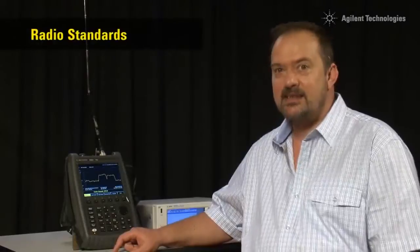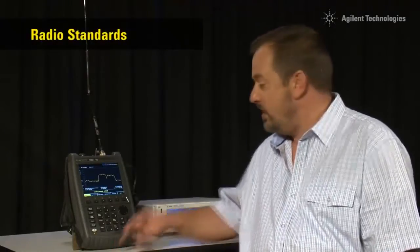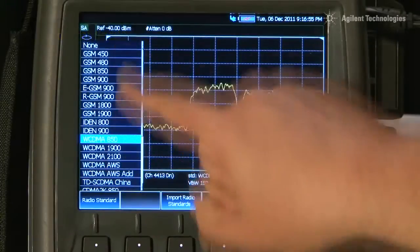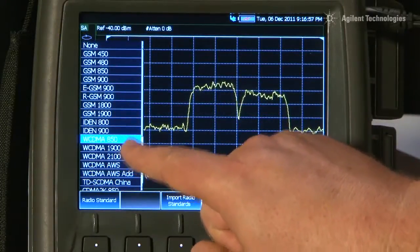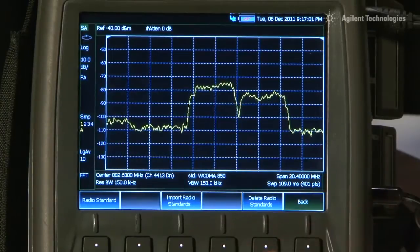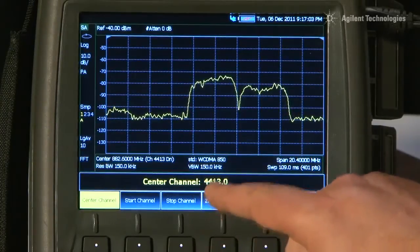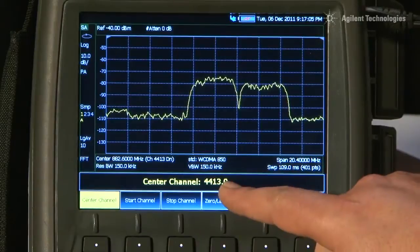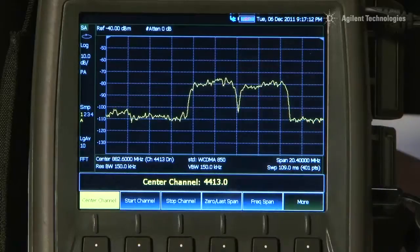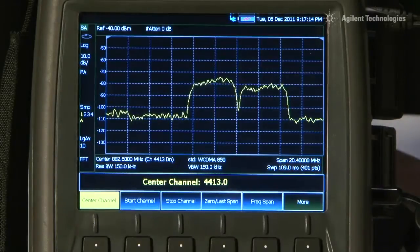If you are using a radio standard such as CDMA or GSM or WiMAX, we can select the radio standard from the built-in list here. Here I have selected WCDMA850 and you can see on the screen that the frequency is now measured in channel number rather than megahertz. This makes it very simple to change channel quickly in the radio standard that you are operating in without having to know the exact frequency of each channel.